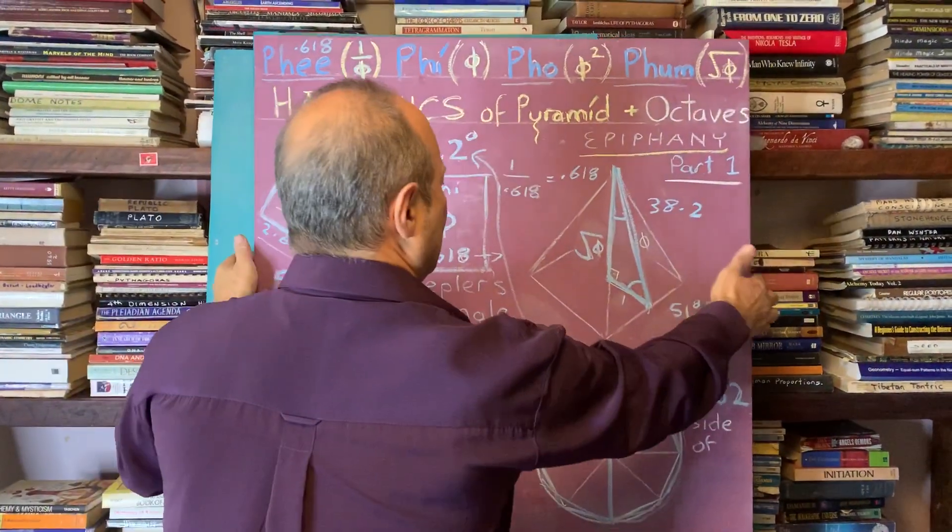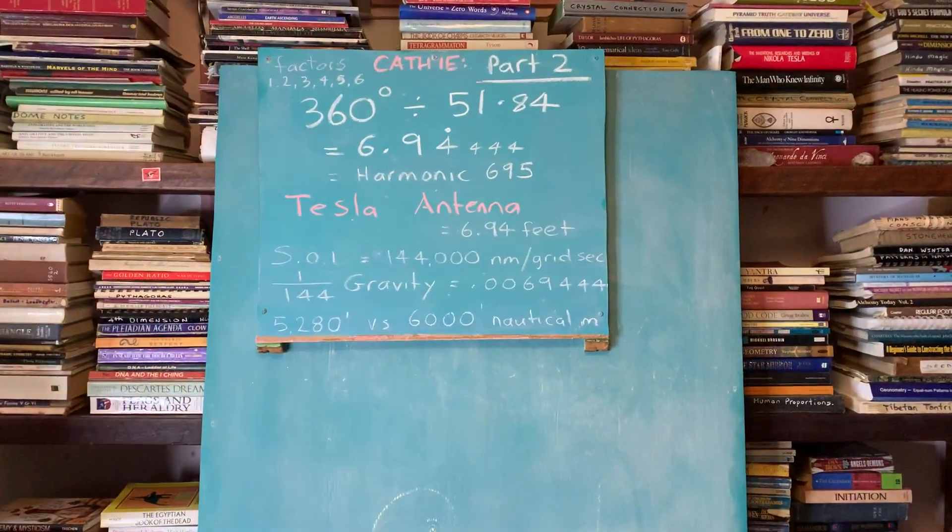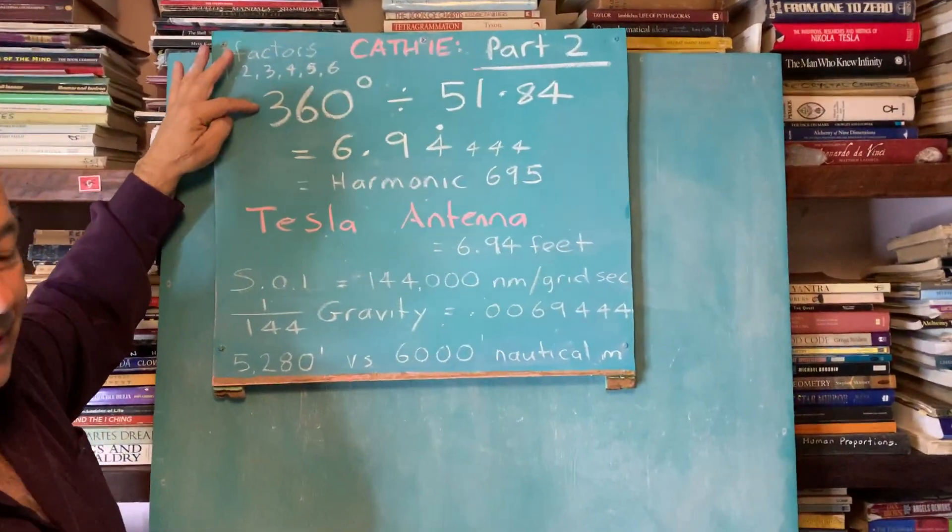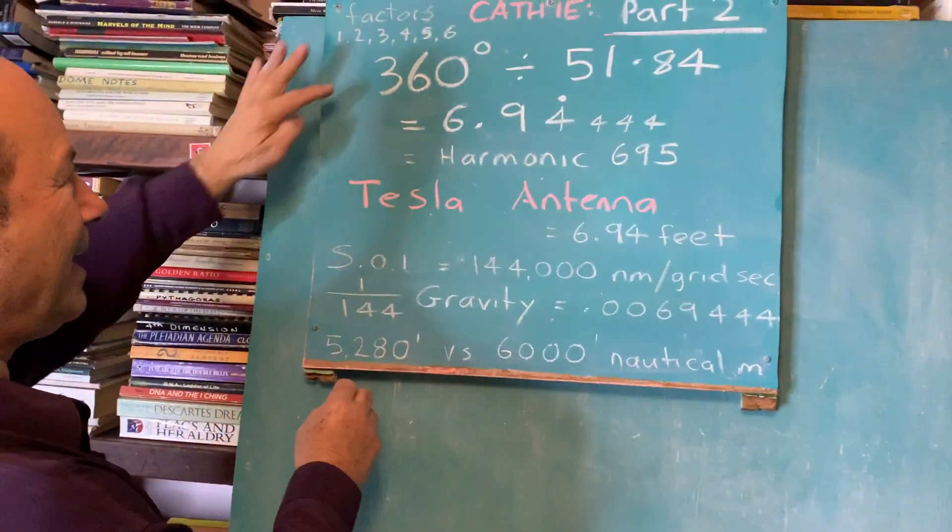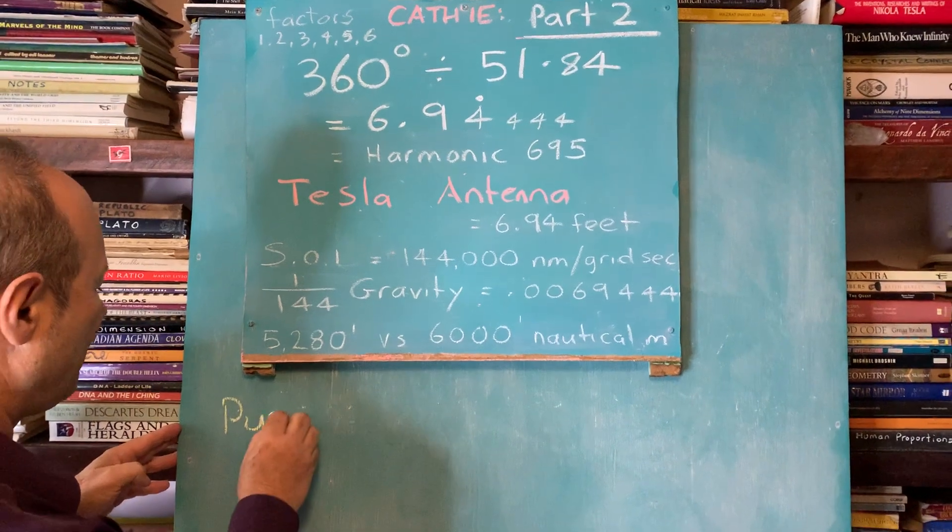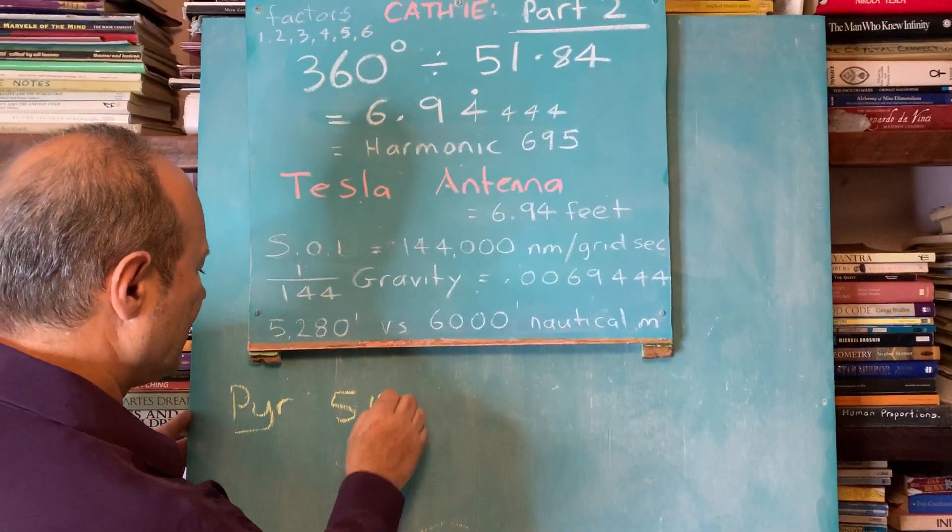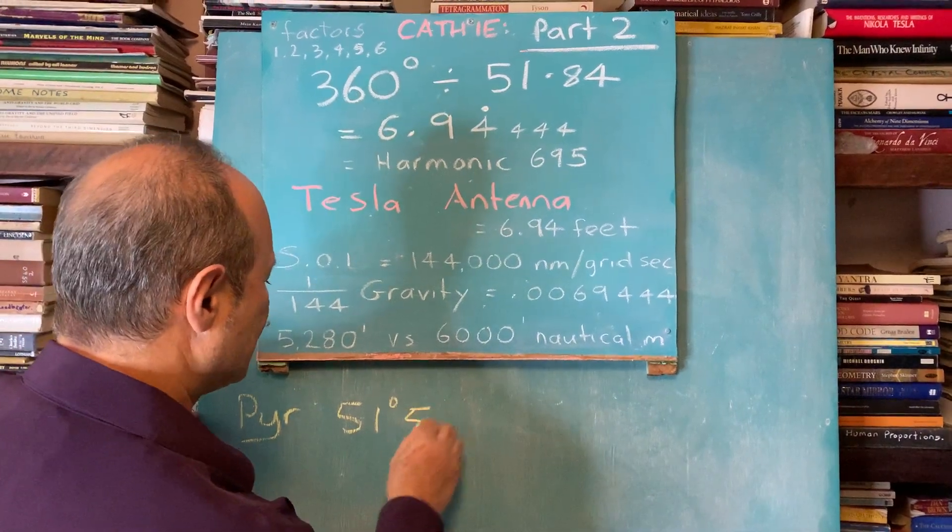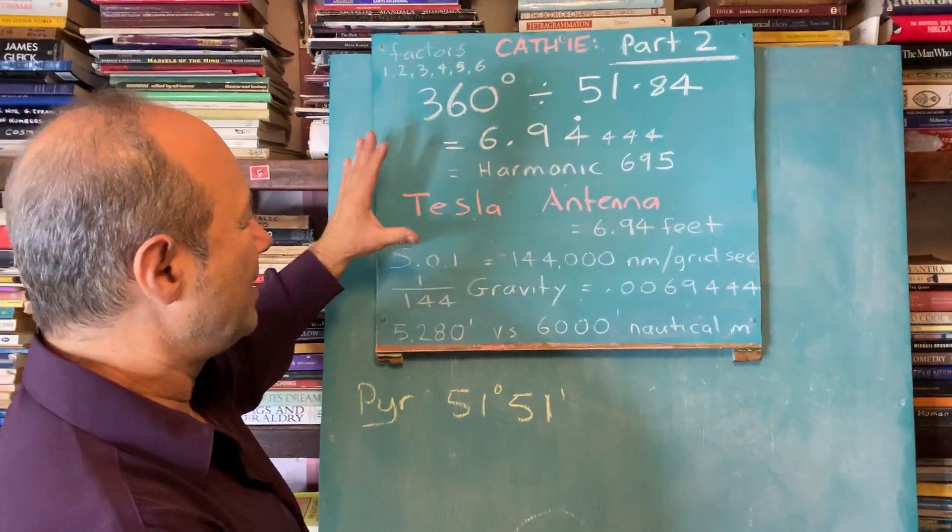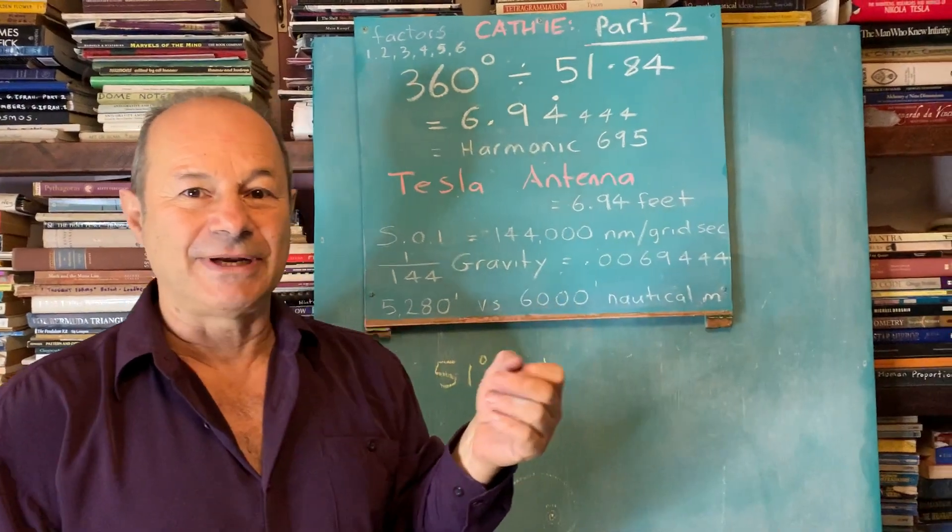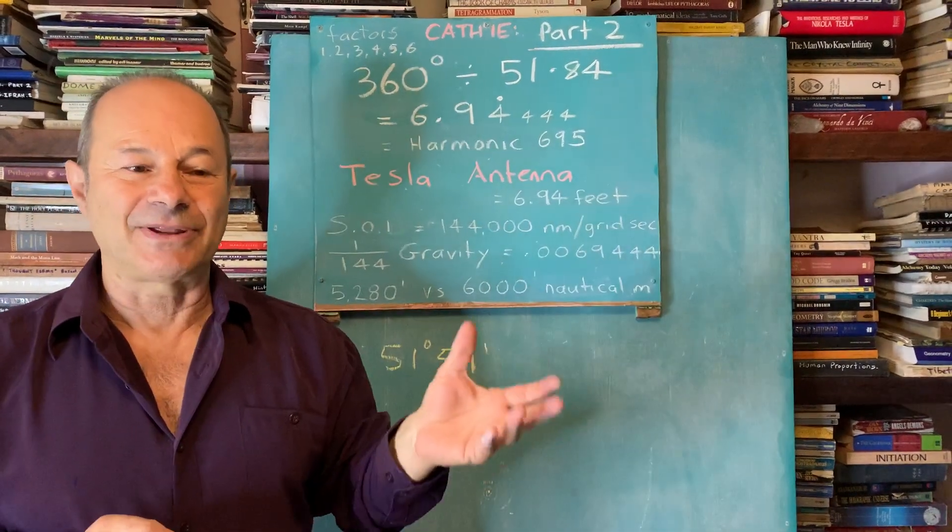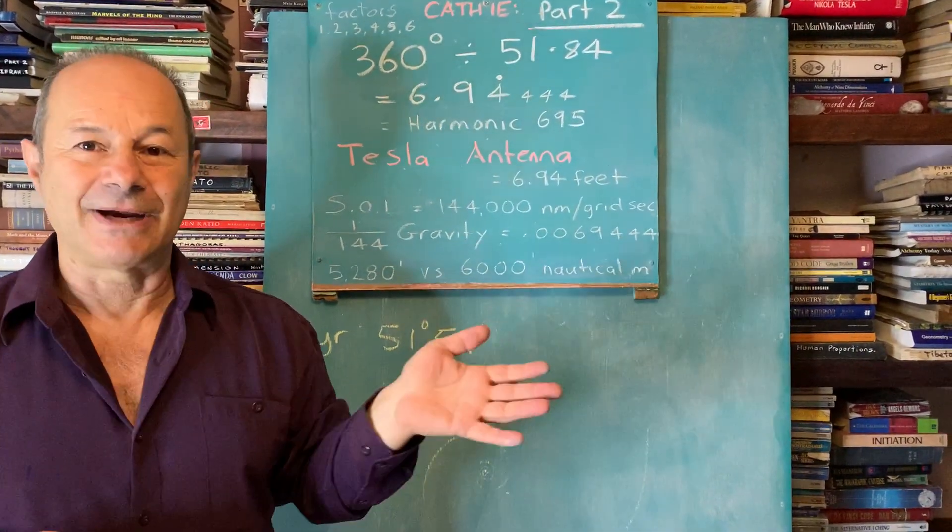We're going to talk a little bit about Bruce Cathy's work. The pyramid had an angle of 51 degrees and 51 minutes, the pyra meaning fire. This subject is quite critical. It's got a lot to do with the earth grid and how we can not just travel around the earth without fuel by following the ley lines, but how we can tap into planetary travel as well.